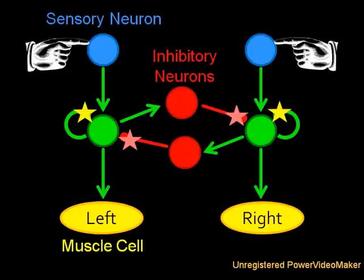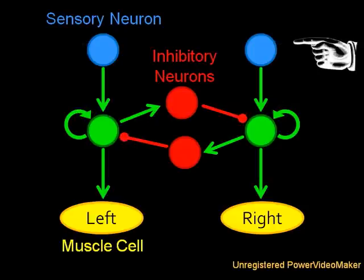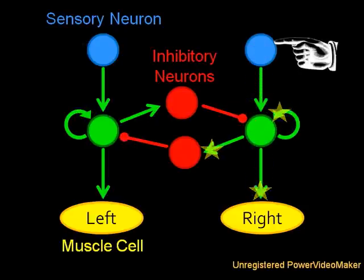When the stimuli are perfectly balanced, they cancel out. However, if one side receives slightly more stimulus, it can beat out the opposite side, resulting in only one muscle contracting.